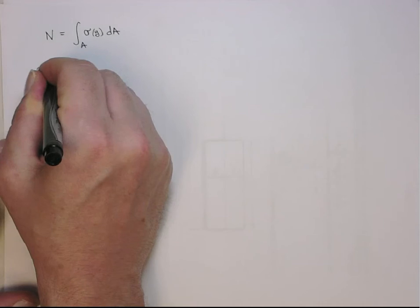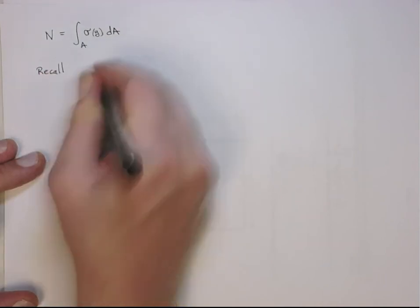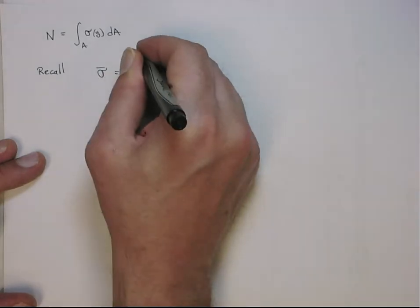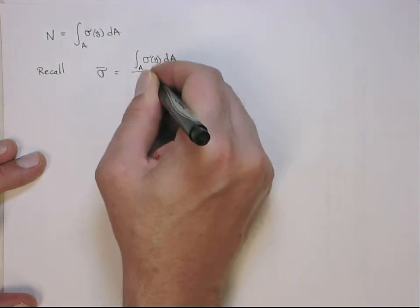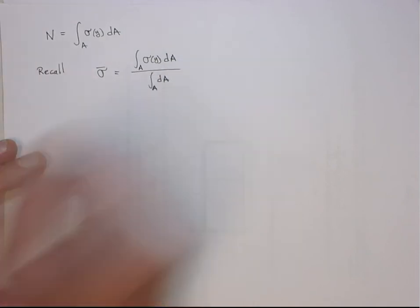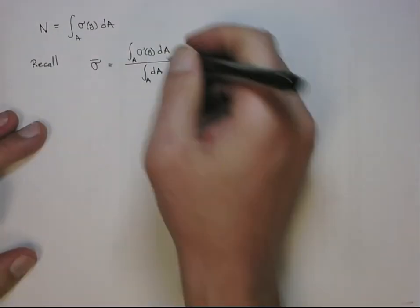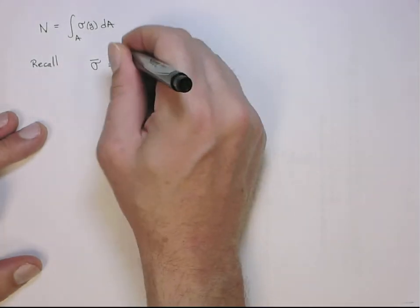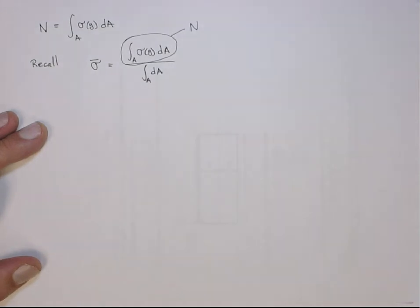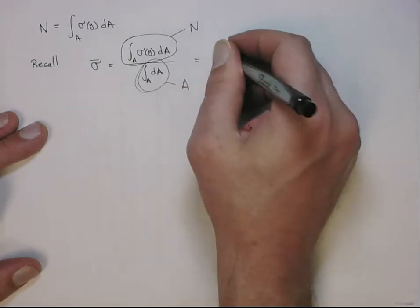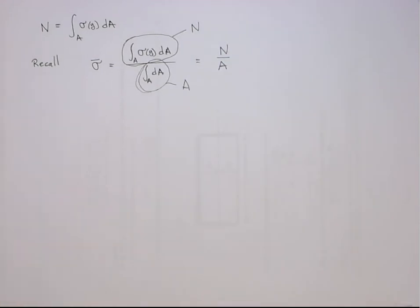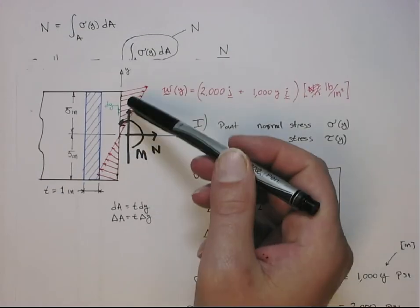If you recall the average normal stress from this relationship, you can see immediately the numerator here is actually N by definition. The denominator is the area, and this gives us the relationship we're used to seeing of the average normal stress being the force over the area, P over A. But here I'm trying to help you appreciate how it arises from the actual force distribution.